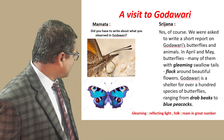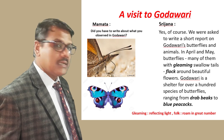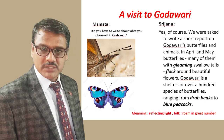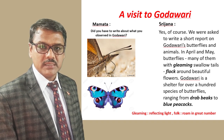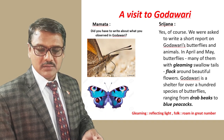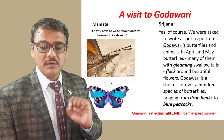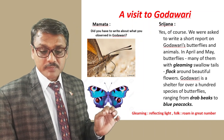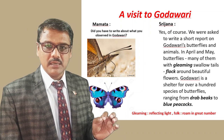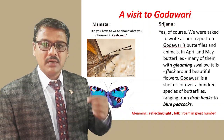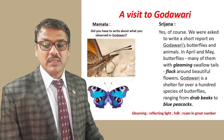Next, Mamata is asking a question and Srijana is again answering. Her question is: Did you have to write about what you observed in Godavari? Were you assigned any task — were you assigned to prepare any project or make notes about your trip? And Srijana answers: Yes, of course. It means they had to prepare a report — they had to write about what they had seen and observed there. We were asked to write a short report on Godavari's butterflies.